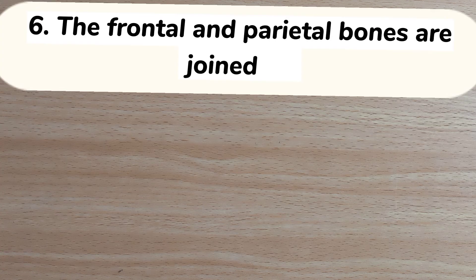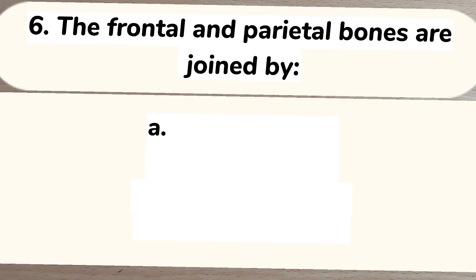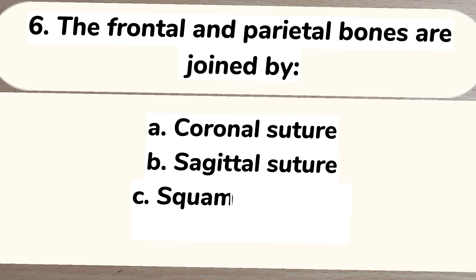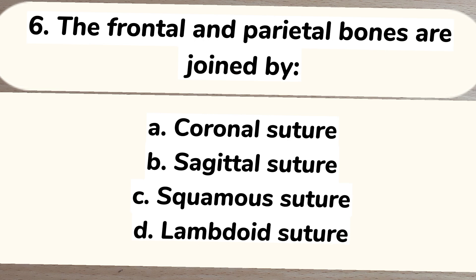Number 6. The frontal and parietal bones are joined by: A. Coronal suture, B. Sagittal suture, C. Squamous suture, D. Lambdoid suture. Answer: A. Coronal suture.